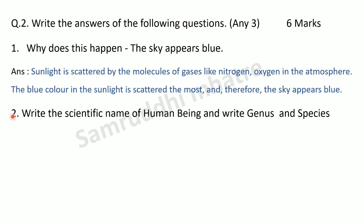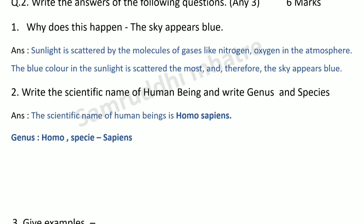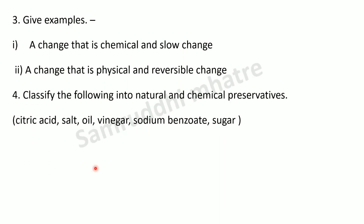Second question: write the scientific name of human beings and write the genus and species. The scientific name of human beings is Homo sapiens. The genus is Homo and the species is sapiens.